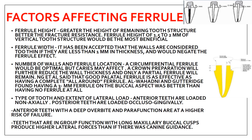Factors affecting the ferrule include: first, the height - it should be at least 1.5 to 2 mm; second, the width - it should be at least 1 mm, otherwise it is too thin and reduces the anti-fracture effect; third, the number of walls and ferrule location - ideally the ferrule should be circumferential (all around the tooth) for optimal effect. However, caries may affect full circumferential preparation, and some researchers suggested preparing the ferrule only on the palatal portion rather than all around.